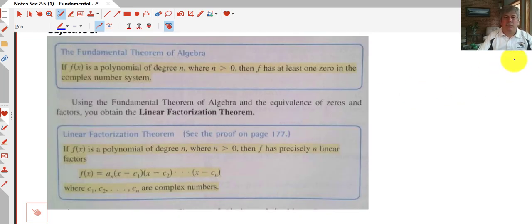Here is the fundamental theorem of algebra. Essentially, the fundamental theorem of algebra says that if we have a polynomial of a particular degree n, there will be at least one zero in the complex number system. And we use this to determine that n is greater than zero, then our function has n linear factors.